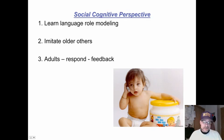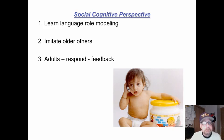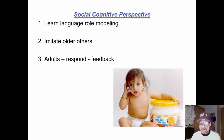Skinner, Thorndike. Social Cognitive Perspective: we learn language through role modeling, hearing other children. We imitate older others, and we've seen this stage with children one or two years old who repeat everything. This is social, interactive, cognitive thinking. Children at this level need adults who respond to them and give them feedback, sometimes corrective feedback — not corrections, but responding to what they say.